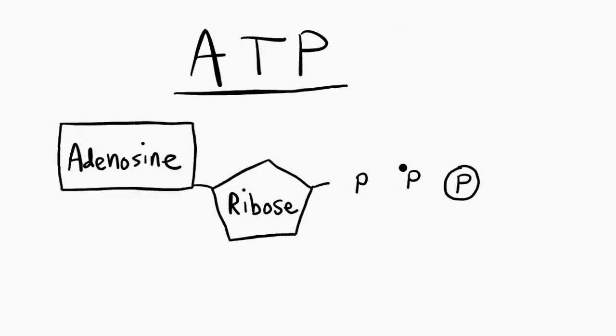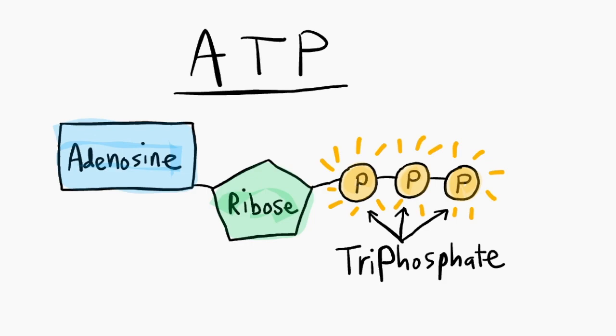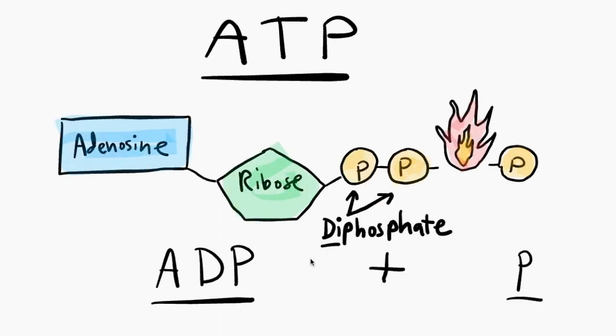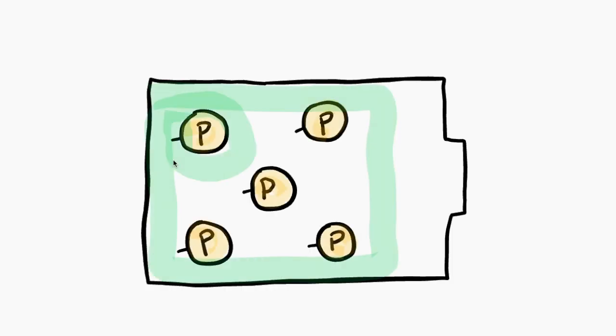So how does ATP work? Well, when ATP or adenosine triphosphate, meaning three phosphates, loses a single inorganic phosphate group, it emits heat. The release of this heat is used as energy for everything in our bodies.